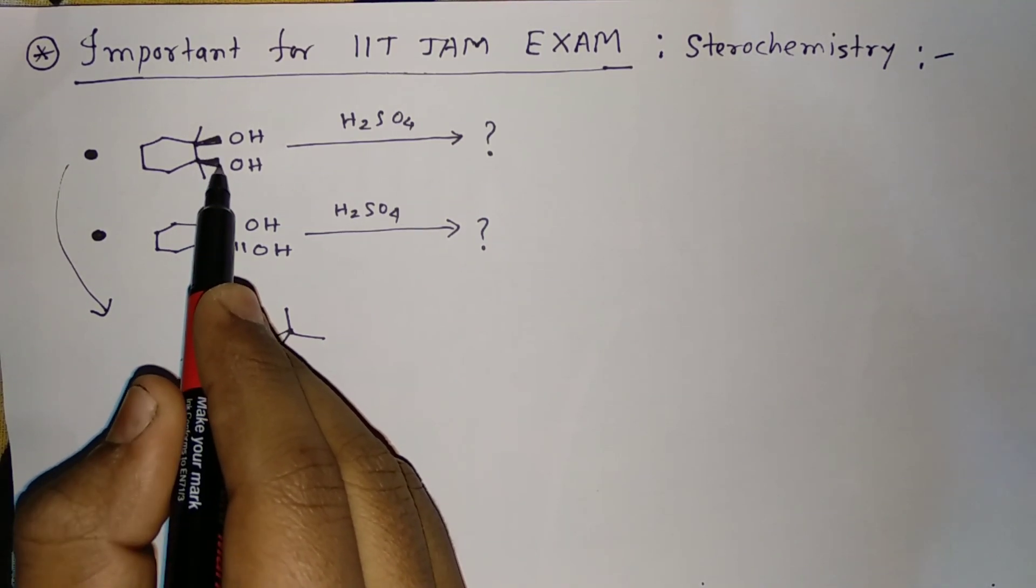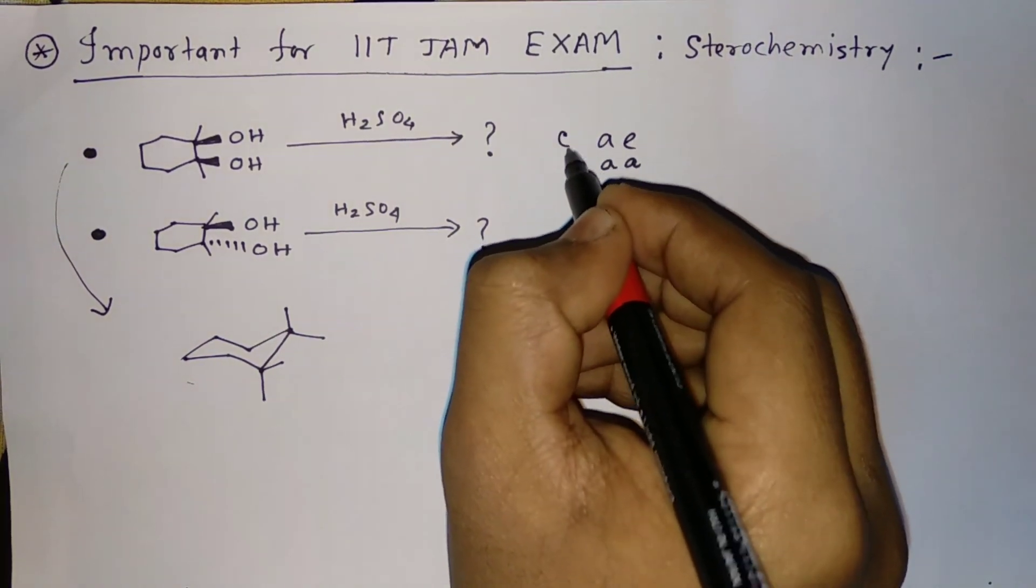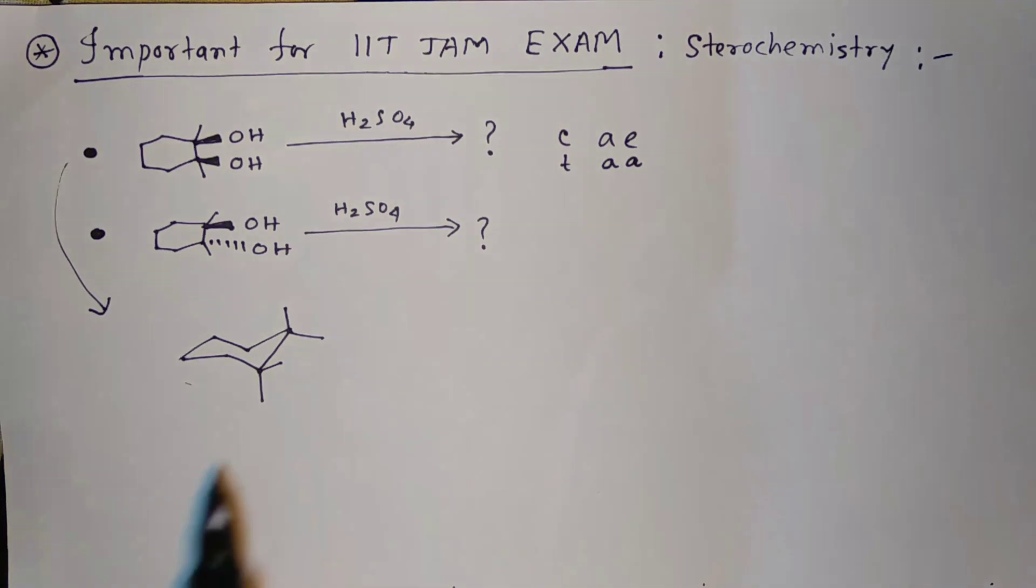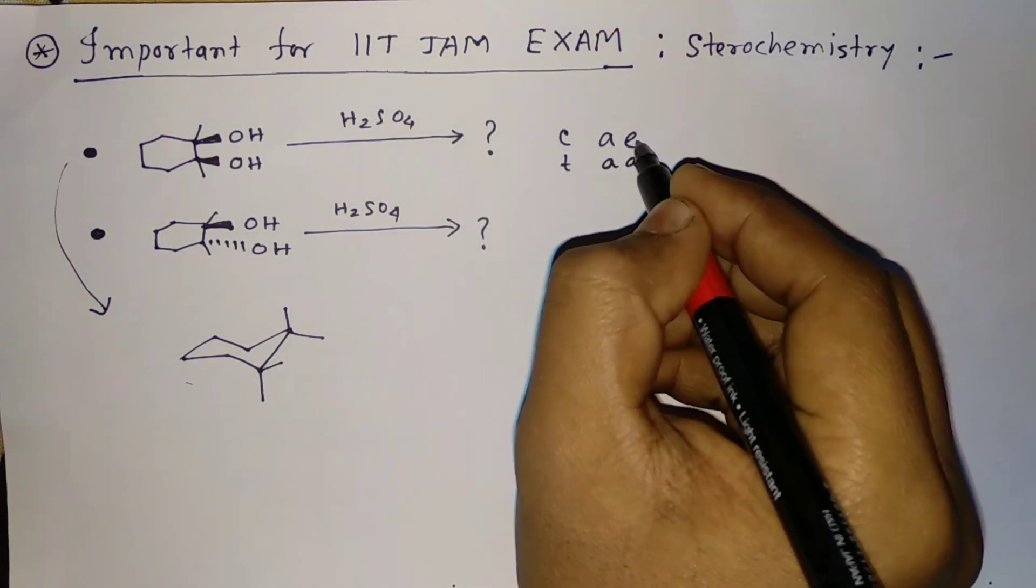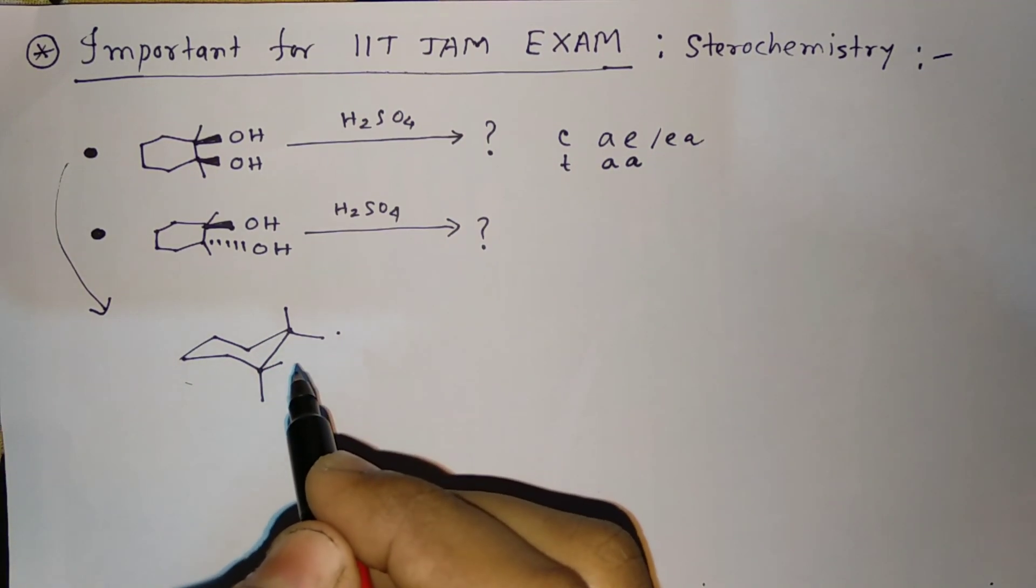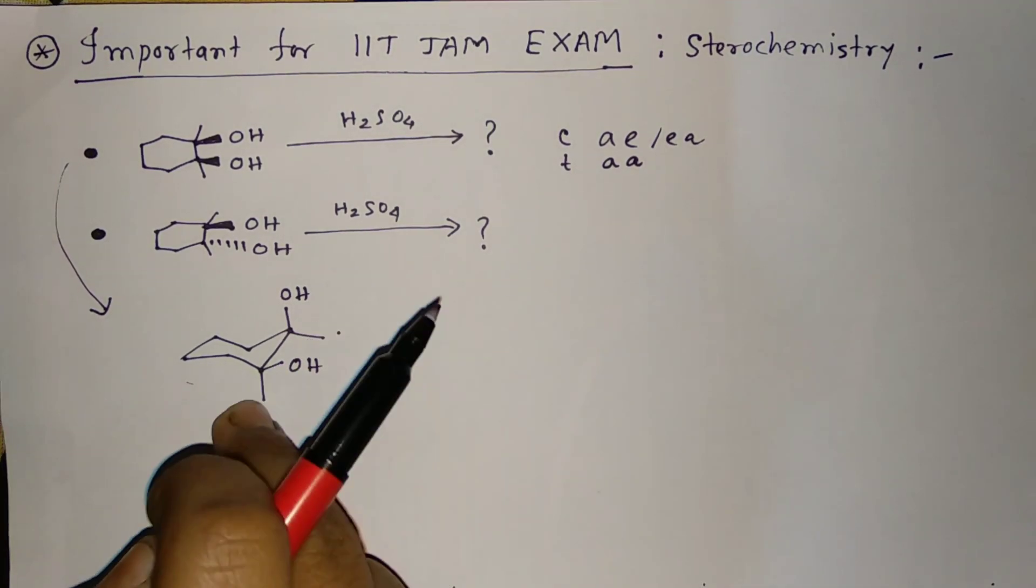So cis-1,2 means both OH bonds are above the plane. Cis-1,2 means axial-equatorial, and trans-1,2 means axial-axial. So this is cis-1,2, that is axial-equatorial or equatorial-axial. If one OH is right here axial, the other OH will be right here, and here two methyl groups are present.